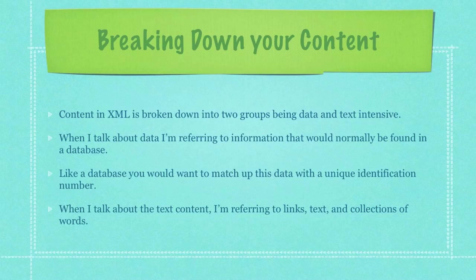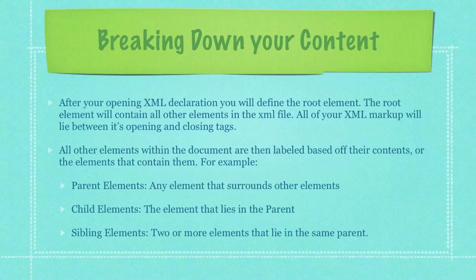Content in XML is broken down into two groups: data and text intensive. When I talk about data, I am referring to information that would normally be found in a database. Like a database, you would want to match up this data with a unique identification number. When I talk about text content, I am referring to links, text, and collections of words. After your opening XML declaration, you will define the root element. The root element will contain all other elements in the XML file, and all of your XML markup will lie between its opening and closing tags. All other elements within the document are then labeled based off their contents or the elements that contain them. Parent elements are any element that surrounds other elements. Child elements are the elements that lie in the parent elements. And sibling elements are two or more elements that lie in the same parent element.